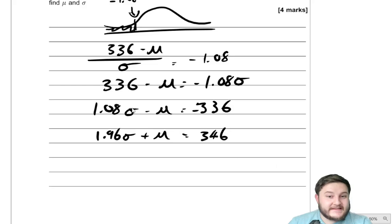So if we plug those into the calculator, because the calculator can solve simultaneous equations, we have a pair of simultaneous equations, and we should get 3.29 for the standard deviation. And the mean is, I think, quite a nice round number, 340 in this case.